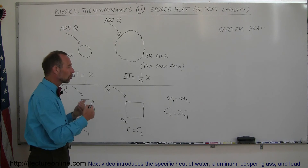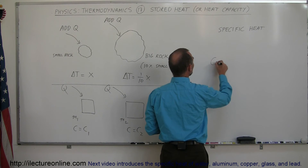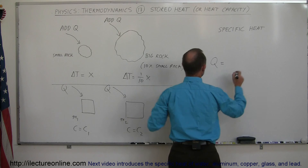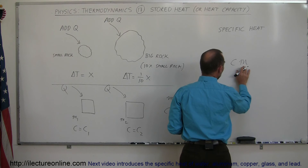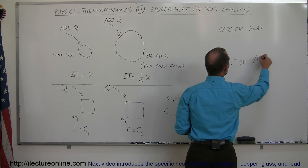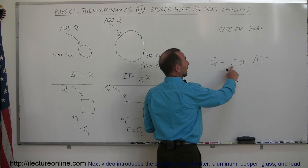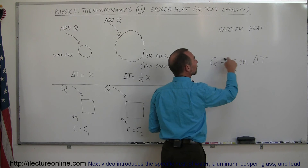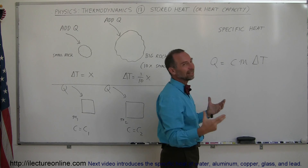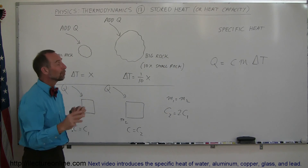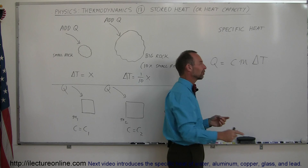Both mass and specific heat are important in determining temperature change. The amount of heat stored in an object is proportional to the mass and proportional to the specific heat. If C is bigger, you need more heat for the same temperature change. If the mass is bigger, you need more heat for the same temperature change. That's how you look at the Q = mcΔT equation.